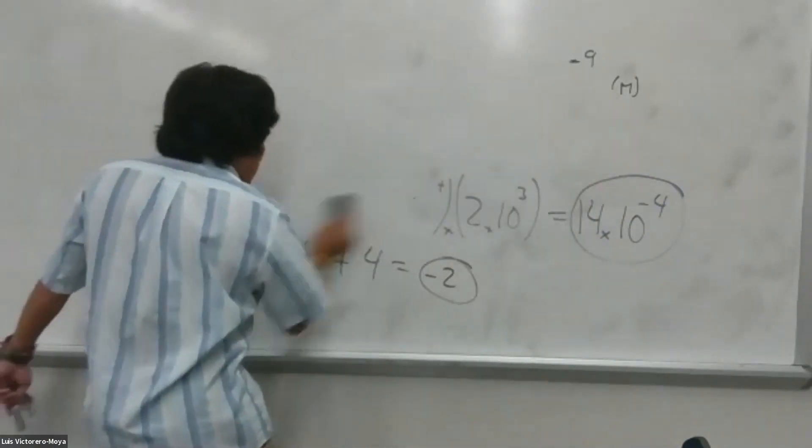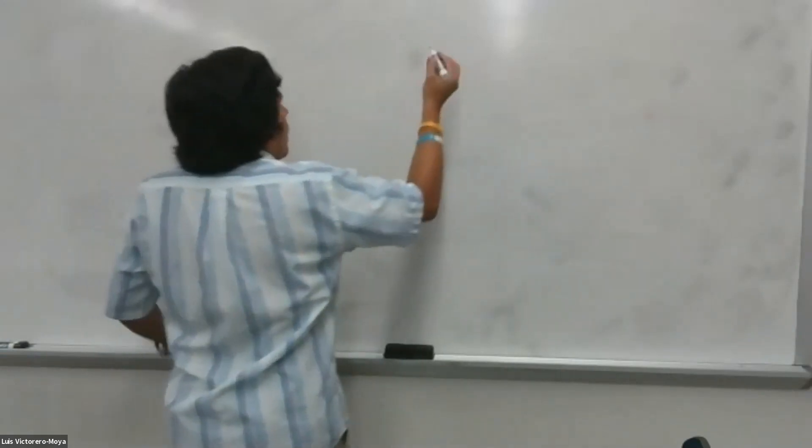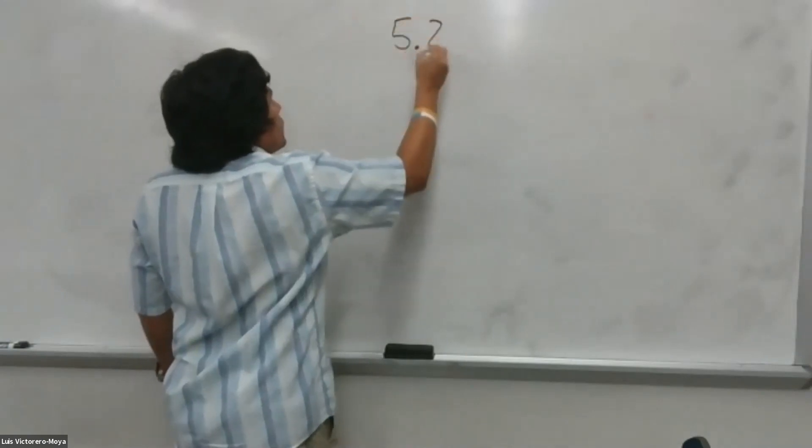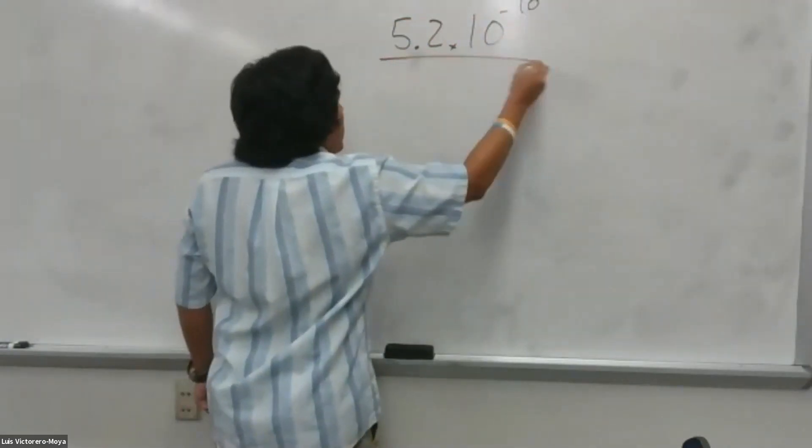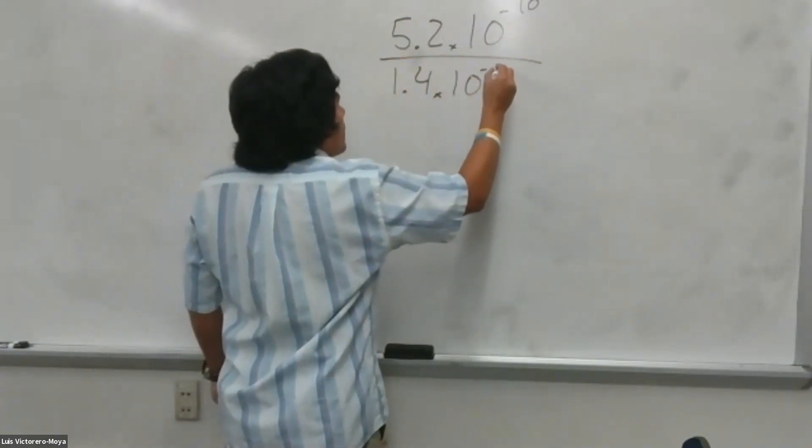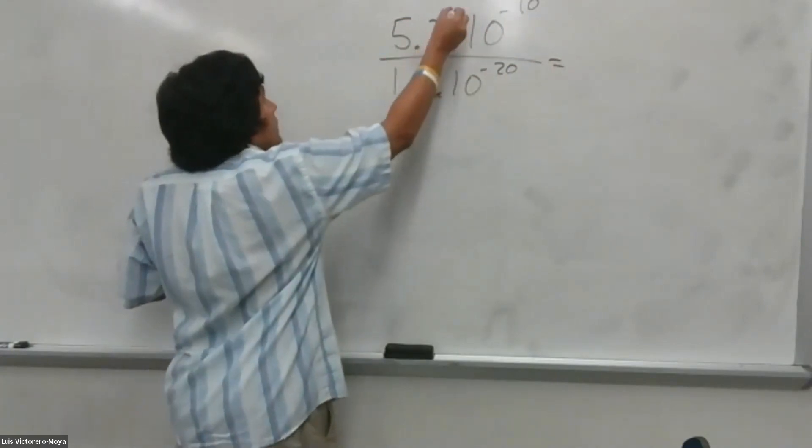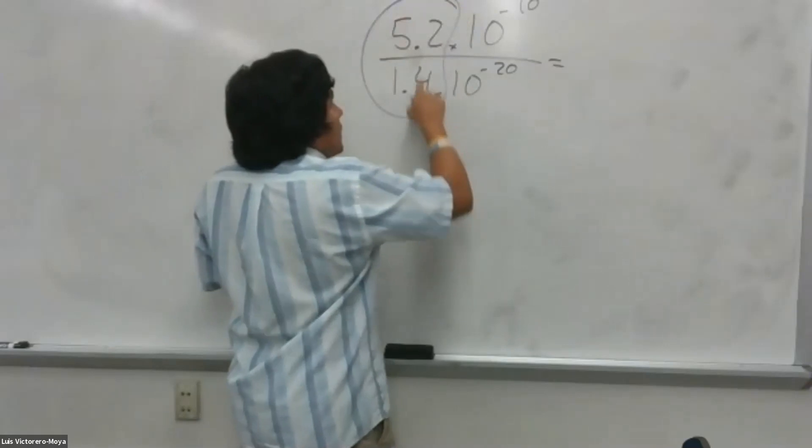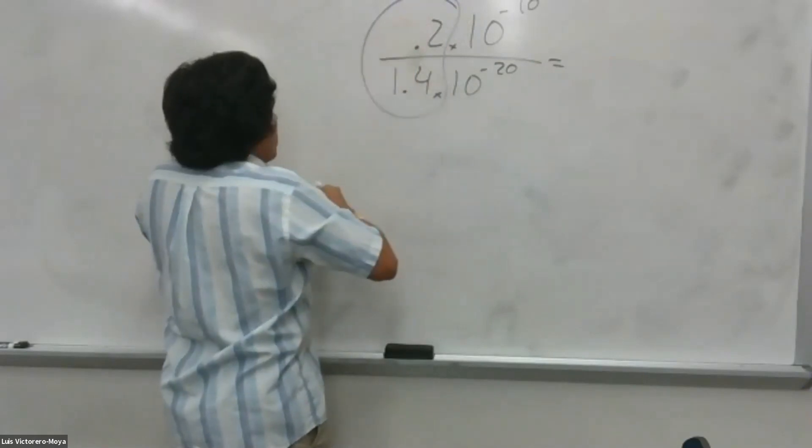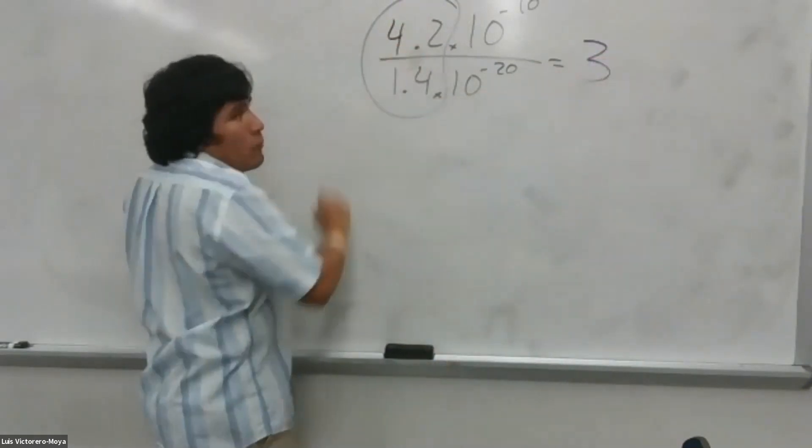Let's check the division. That division will have, for example, here, 5.2 times 10 to the negative 10 divided by 1.4 times 10 to the negative 20. So that is a much smaller number than this. So when you divide this, if you do this in a calculator, you will get, let me change this to make it a whole number, you will get 3. 4.2 divided by 1.4 is three.